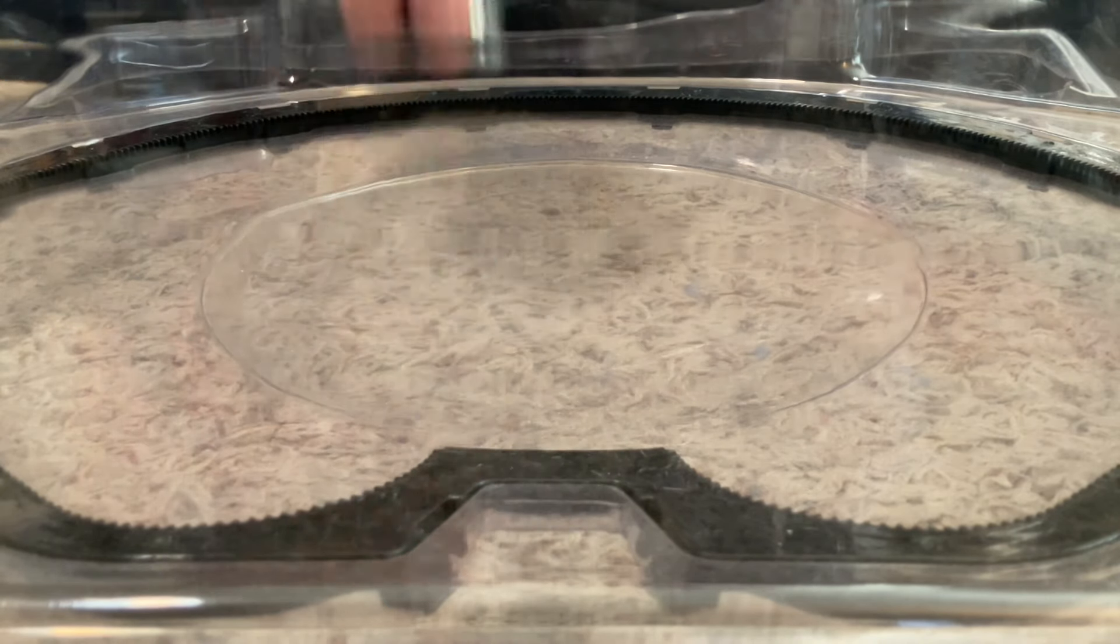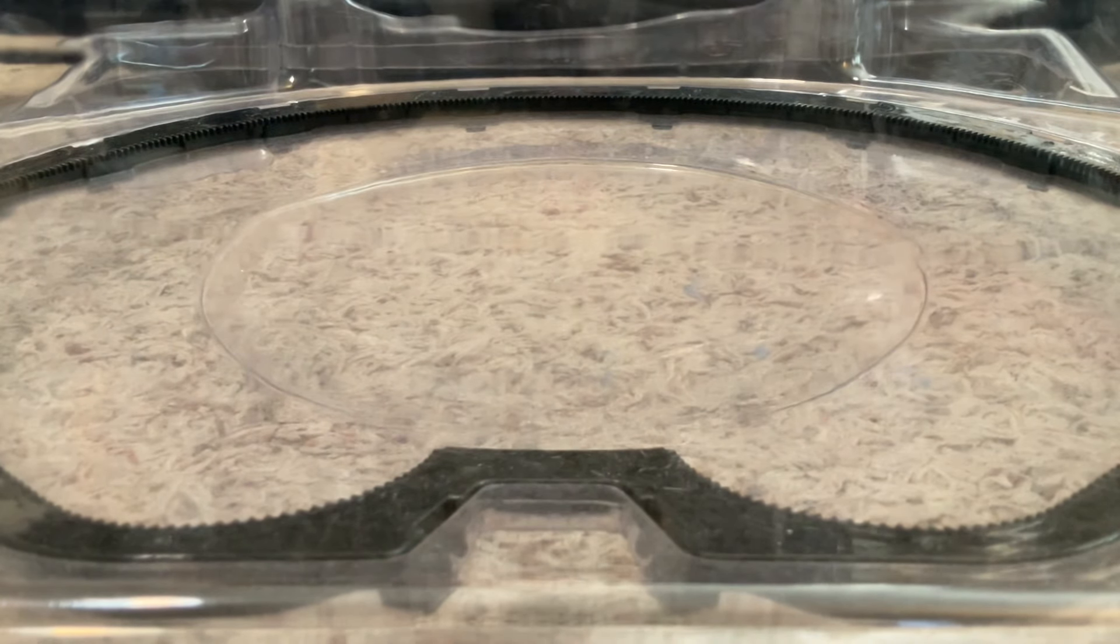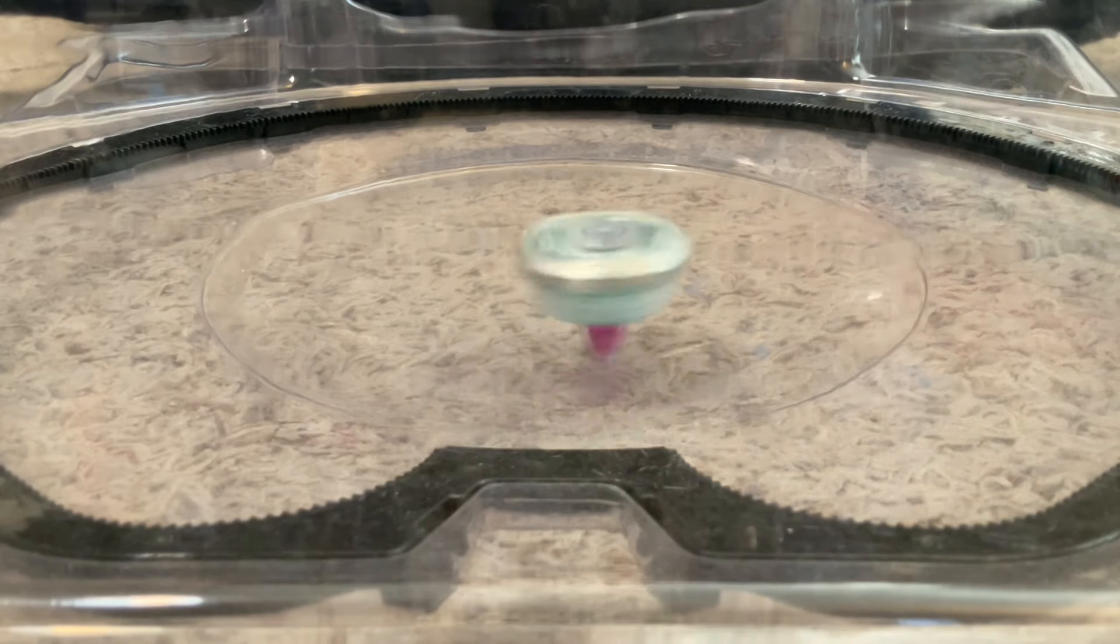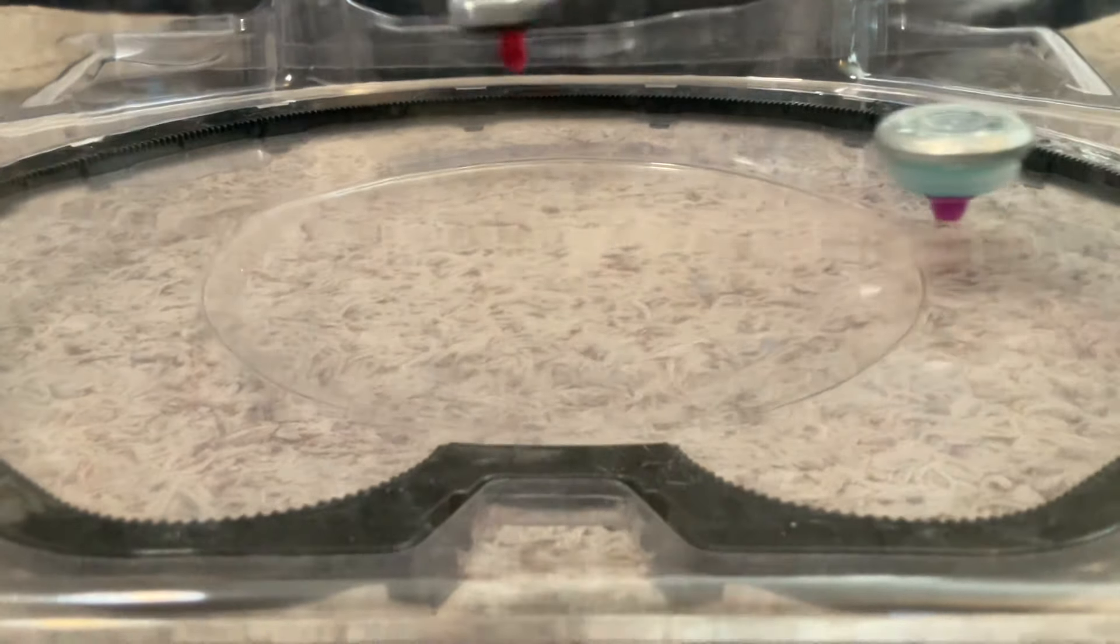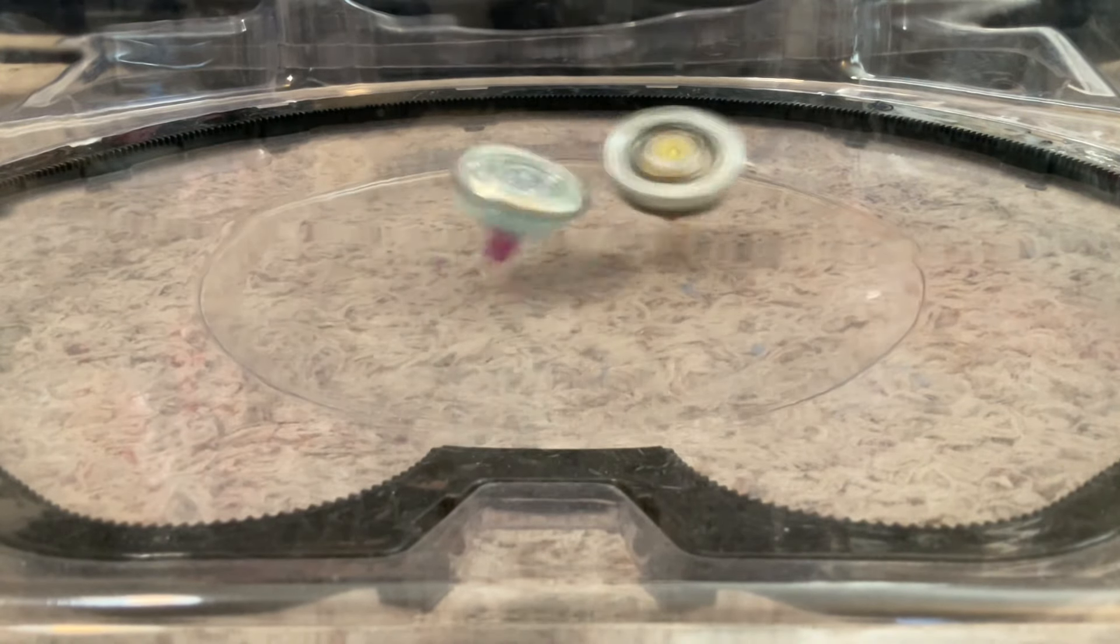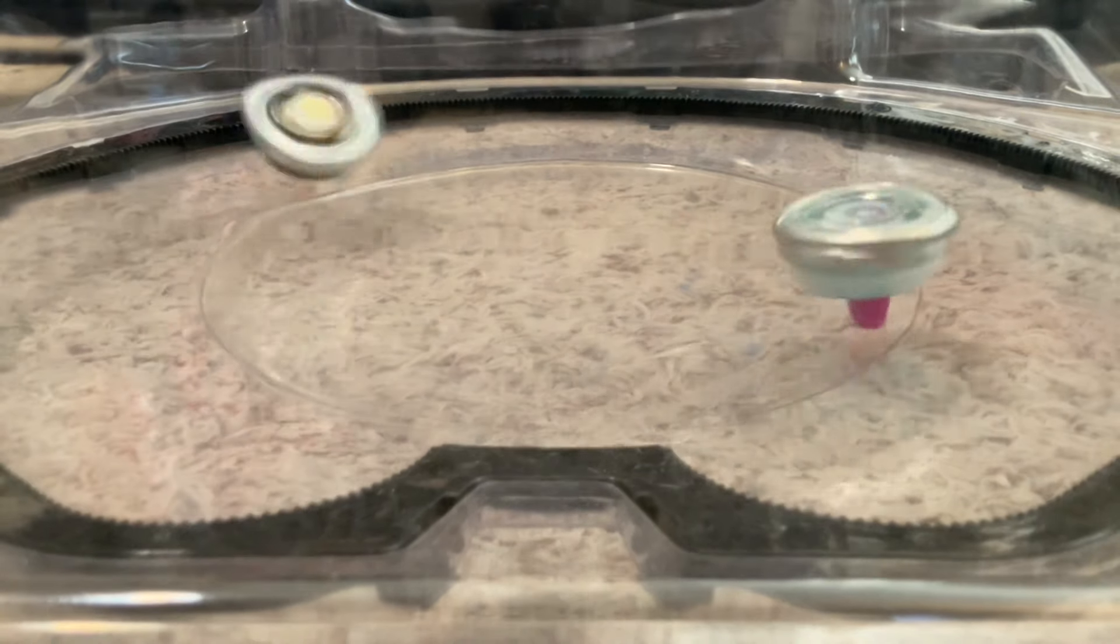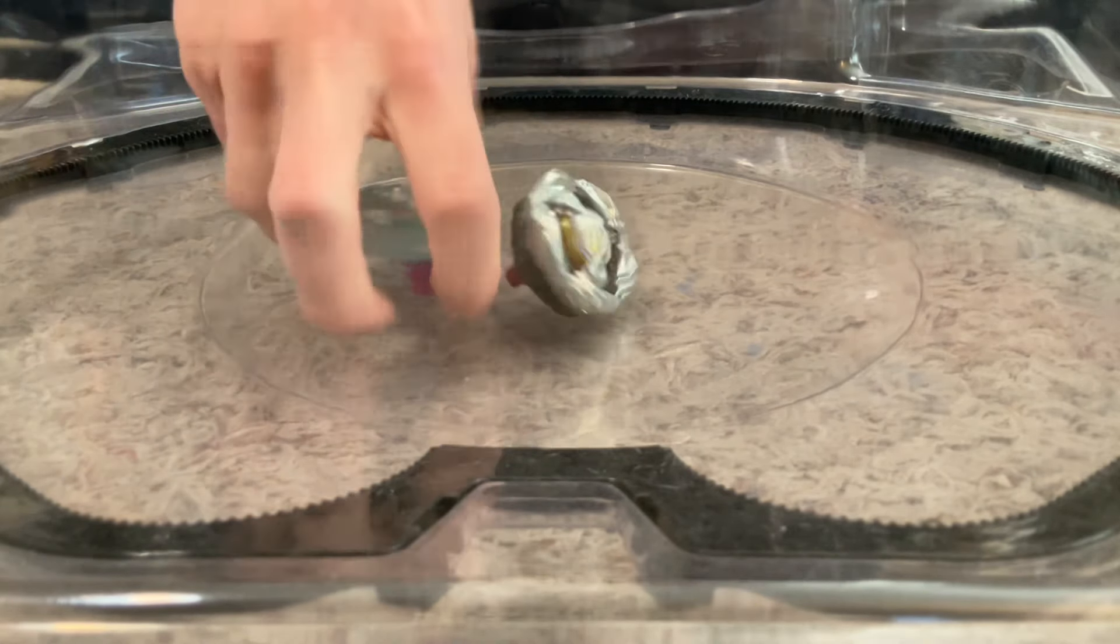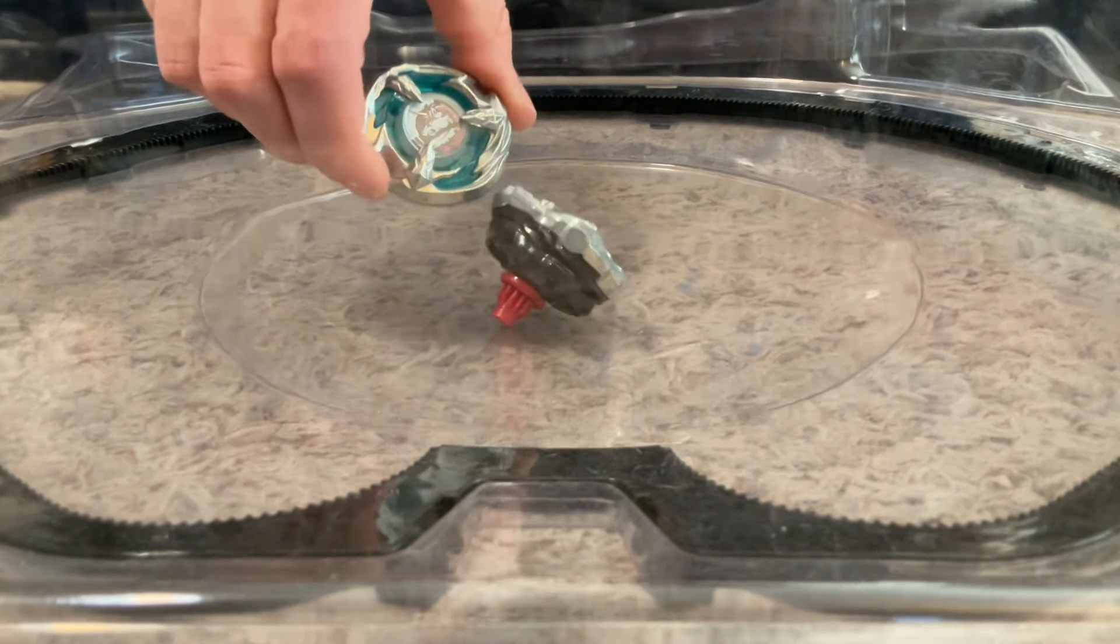Three points to Unicorn Sting. One more point and it wins. Just gonna check the ratchets. They look pretty tight. Three, two, one, let it rip! Oh, big hits. Big hits. And Unicorn Sting wins with a score of four to one.